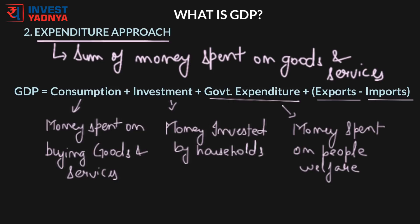As discussed earlier, we need to include exports to other countries in the calculation of GDP, but we need to subtract imports from other countries since those are not part of domestic production. Mostly GDP is calculated using both approaches and the calculations are done in such a way that the values from both approaches come out almost equivalent.